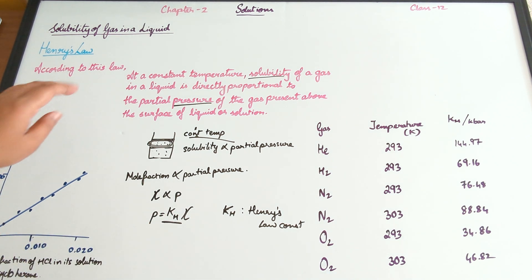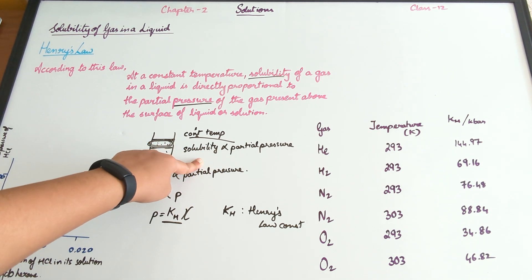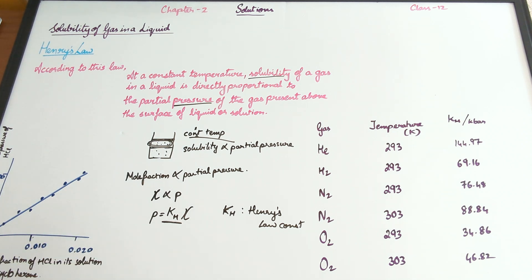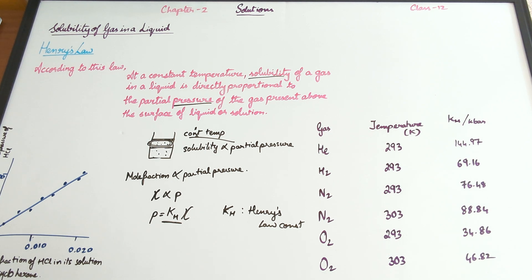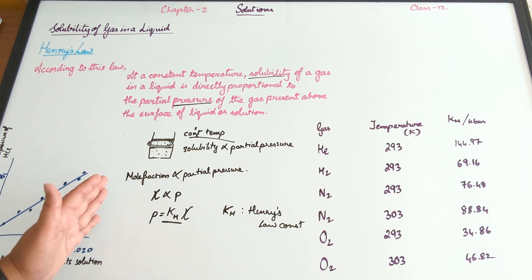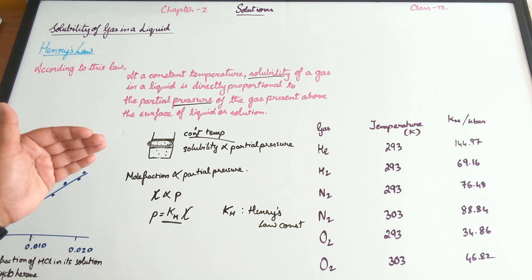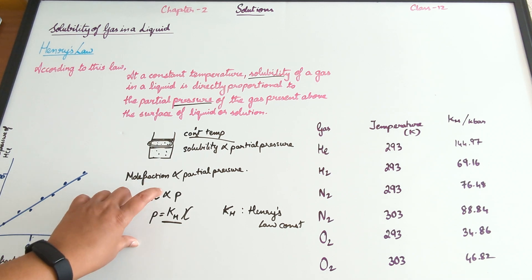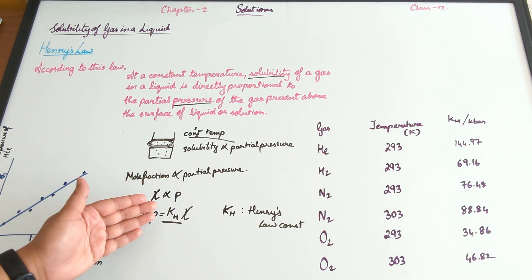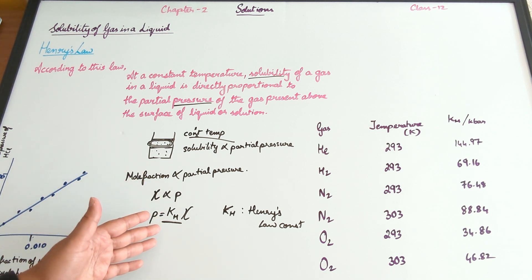So how did we get from the proportionality to this equation? At a constant temperature, the solubility of a gas in a liquid is directly proportional to the partial pressure of the gas above it. Dalton also independently said that solubility is a function of partial pressure. We consider mole fraction to be a measure of solubility. So mole fraction of the gas in the liquid is directly proportional to the partial pressure of the gas above it, at constant temperature. Mole fraction is X, partial pressure is P, and to remove the proportionality symbol and get an equals sign, we add a proportionality constant KH — Henry's law constant.